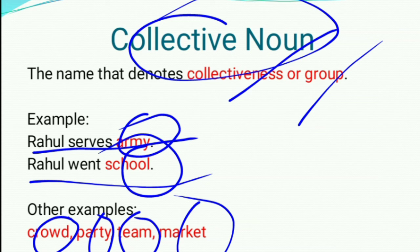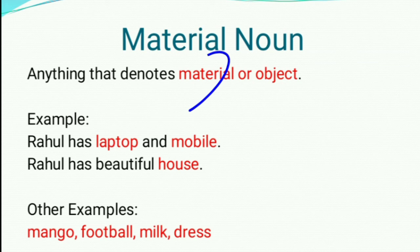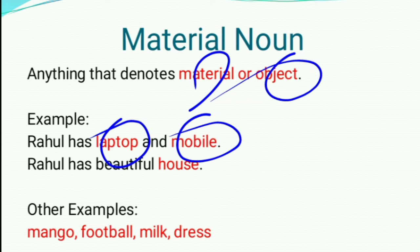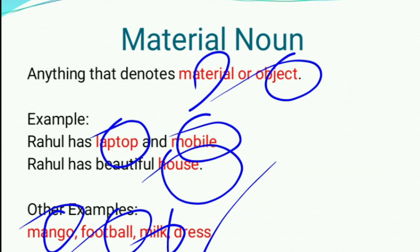Now, material noun — anything that denotes a material or object. For example, Rahul has a laptop and mobile — laptop and mobile are material nouns. Rahul has a beautiful house — that is also a material noun. Other examples: mango, football, milk and dress — they are examples of material noun.